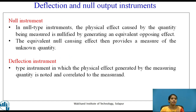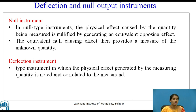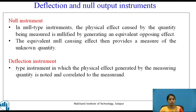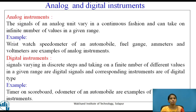Null and deflection output instruments. In a null type instrument, the physical effect caused by the quantity being measured is nullified by generating an equivalent opposing effect; the equivalent null-causing effect then provides a measure of the unknown quantity. In a deflection instrument, the physical effect generated by the measuring quantity is noted and correlated to the measurand.